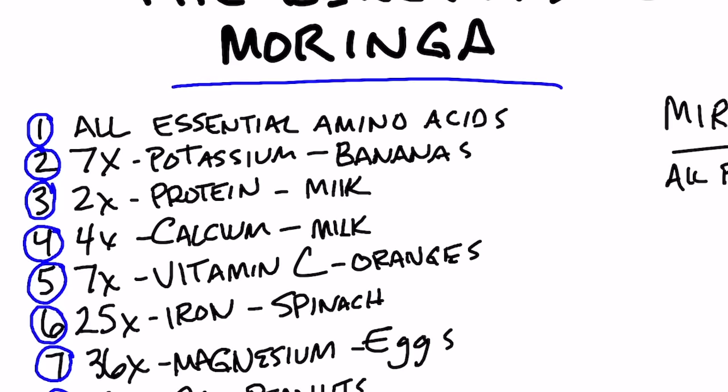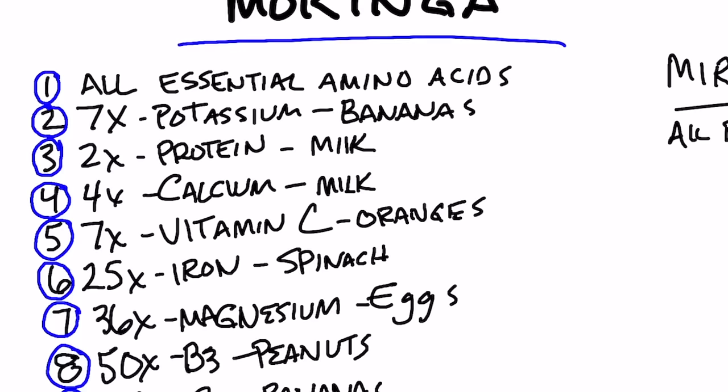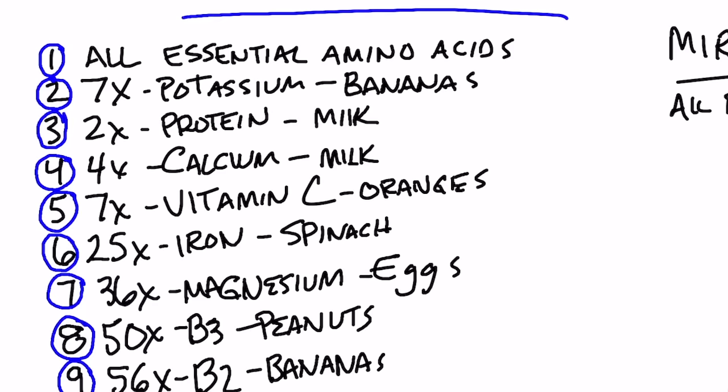Number five, seven times more vitamin C than an orange. Number six, 25 times the iron than spinach. Now, of course, it's not the heme iron, but it's still some iron that can be converted or used by our bodies to a certain degree.